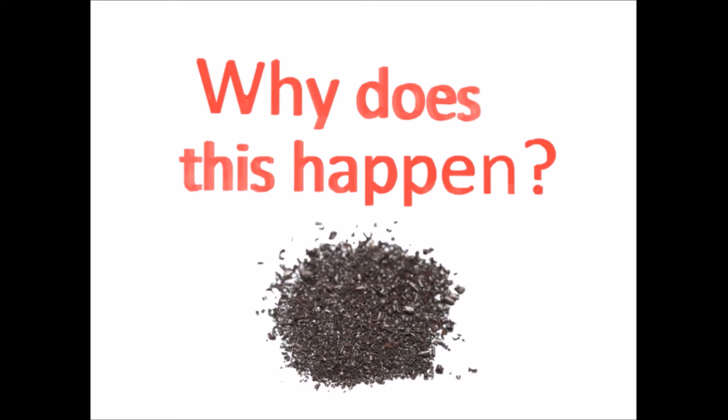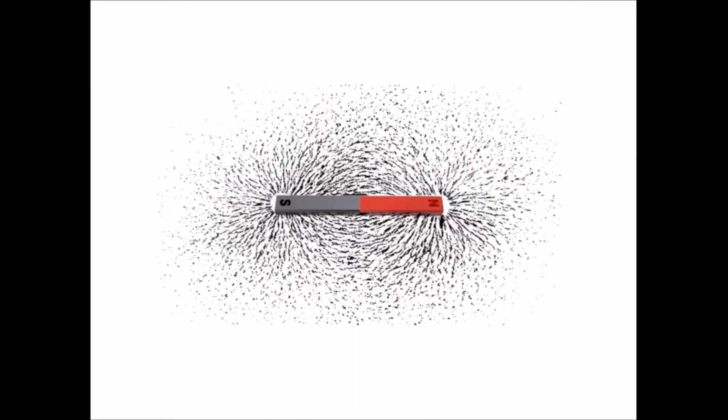At first, the filings look pretty random. But place a magnet on the paper and this happens. The filings reorganize themselves into a distinctive shape. They sort of curve around the magnet in a series of ovals. What is going on?